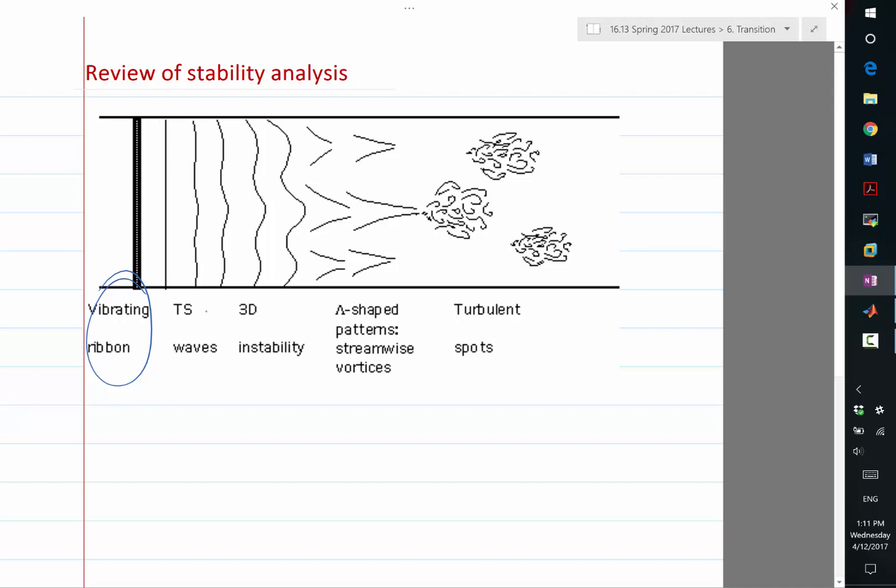So you can imagine this portion, which is actually the transition itself, happens at a much shorter distance, in natural transition at least, than the region over which the TS waves has to grow.